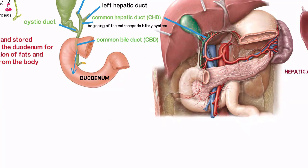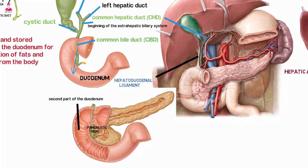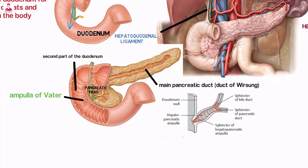The CBD continues its caudal descent along with the hepatic artery and portal vein within the hepatoduodenal ligament, curves slightly to the right away from the portal vein, then courses posterior and medial to the first part of the duodenum, behind the head of the pancreas. It follows a groove on the posterior surface of the pancreatic head, then pierces the medial wall of the second part of the duodenum along with the main pancreatic duct (duct of Wirsung), through the ampulla of Vater. The ends of both ducts are surrounded by the circular muscle fibers of the sphincter of Oddi.